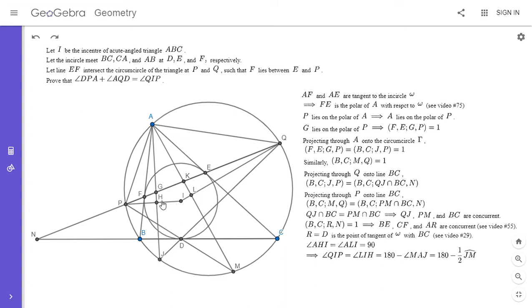That's because in this quadrilateral, two of the angles are right angles. So since LIH is one angle, the other angle has to be 180 minus angle LIH. So LIH is 180 minus angle LAH, which is the same as 180 minus angle MAJ. And angle MAJ, that's half of arc JM in the big circumcircle gamma. All right. And now I'm going to do another angle chase with these two angles. So angle DPA and angle AQD.